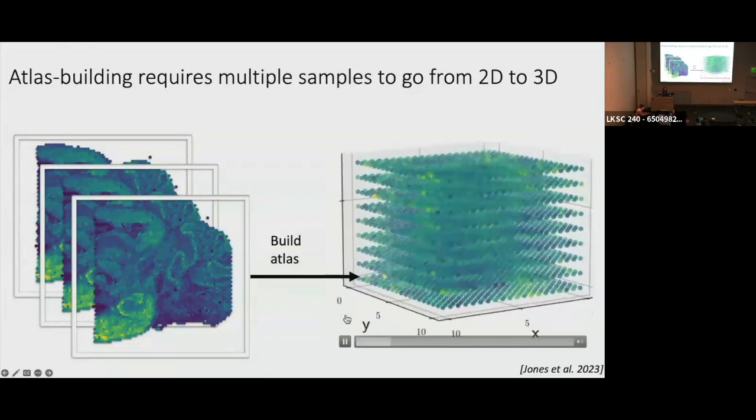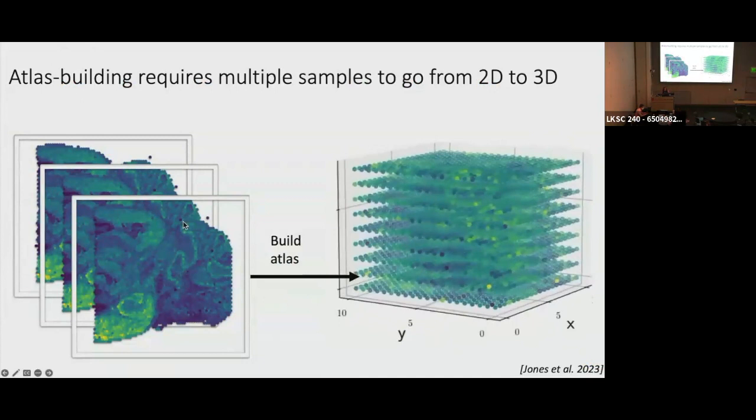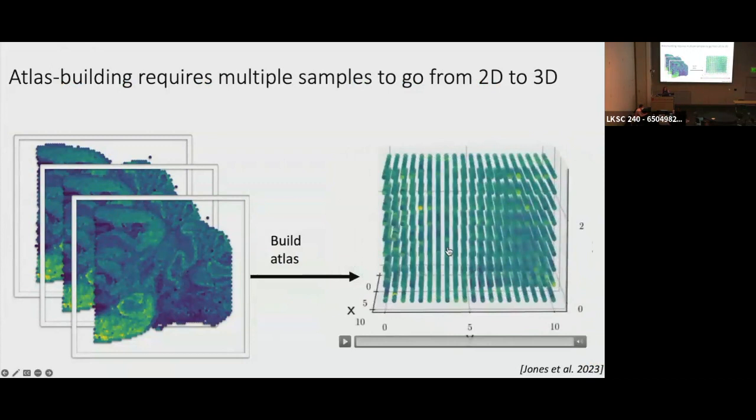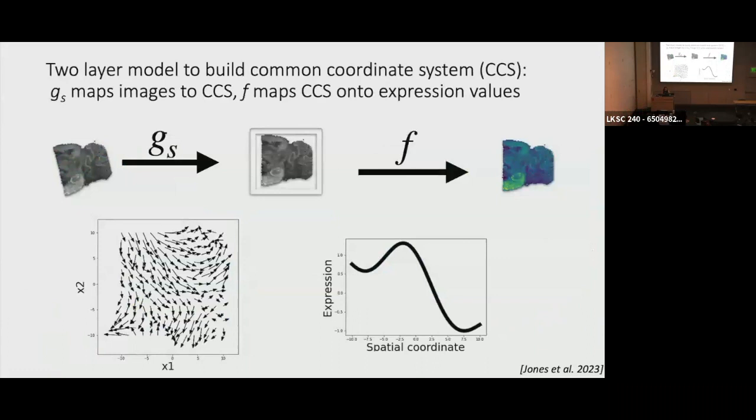This is a breast tumor sample — three, actually four slices — and this is the actual breast tumor itself, where I've colored the expression levels of a specific gene within that 3D space that we've imputed using our approach. I'm going to go through that approach briefly and then tell you about a method we came up with to tell you where to cut — what samples would be optimal for building these 3D atlases. The model was just published last week.